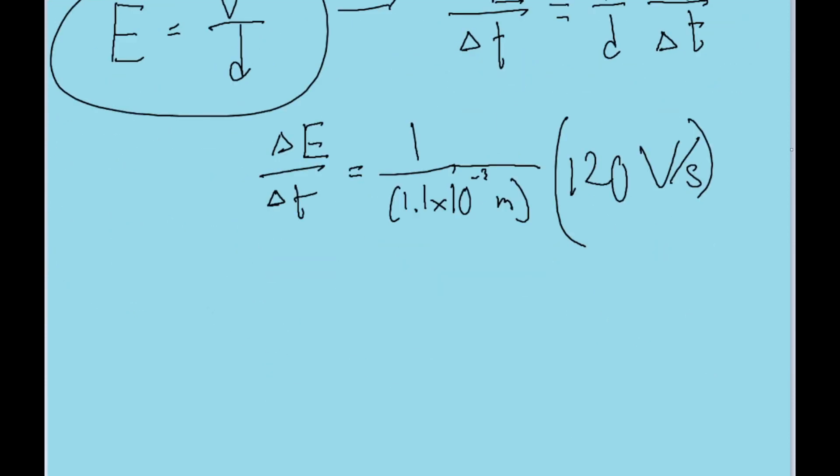If we put this into our calculator, we find a rate of change of the electric field of 1.1 times 10 to the power of 5 volts per meter per second. That is the answer to this problem.